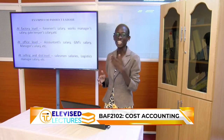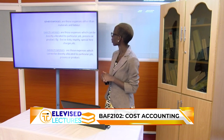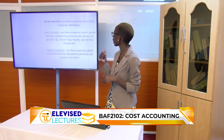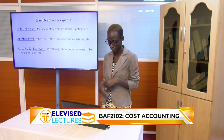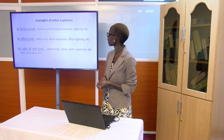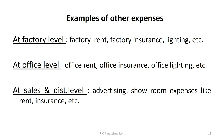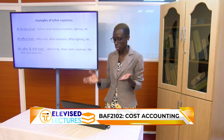Other expenses are expenses other than material or labor. Direct expenses include excise duty paid, taxes such as VAT, royalties, and special hire charges. Indirect expenses cannot be directly allocated to a particular job, process, or product. At the factory level: rent, insurance, and lighting. At the office level: office rent, office insurance, office lighting. For sales and distribution: advertising, showroom expenses, etc.